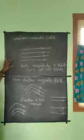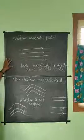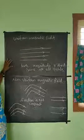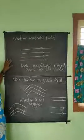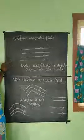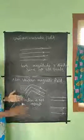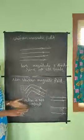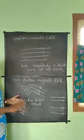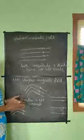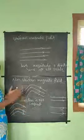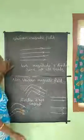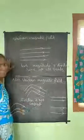Uniform magnetic field — example one: equally spaced magnetic field lines. This equally spaced pattern is called a uniform magnetic field.